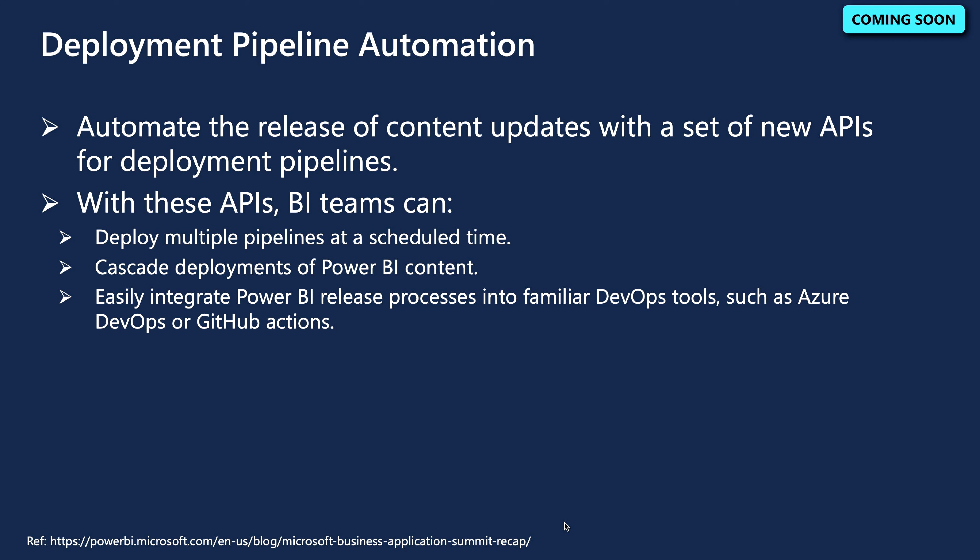Deployment pipeline automation is another feature many are already using in Power BI Premium per user or Power BI Premium capacity. A new set of APIs for deployment pipelines will allow BI teams to automate the release of content updates, deploy multiple pipelines at a scheduled time, and cascade deployments of Power BI content. You will also be able to integrate the Power BI release process into familiar DevOps tools such as Azure DevOps or GitHub Actions.